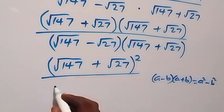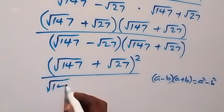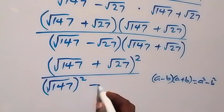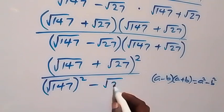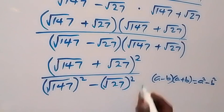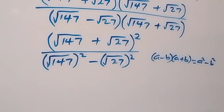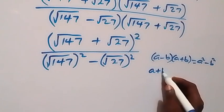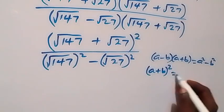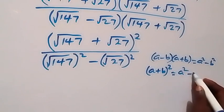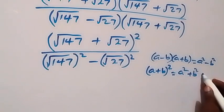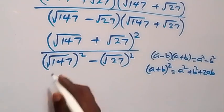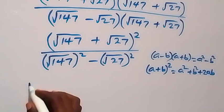At this point we can write the denominator as root 147 squared minus root 27 squared. Then from the numerator, following the expansion of a plus b squared, this gives us a squared plus b squared plus 2ab.